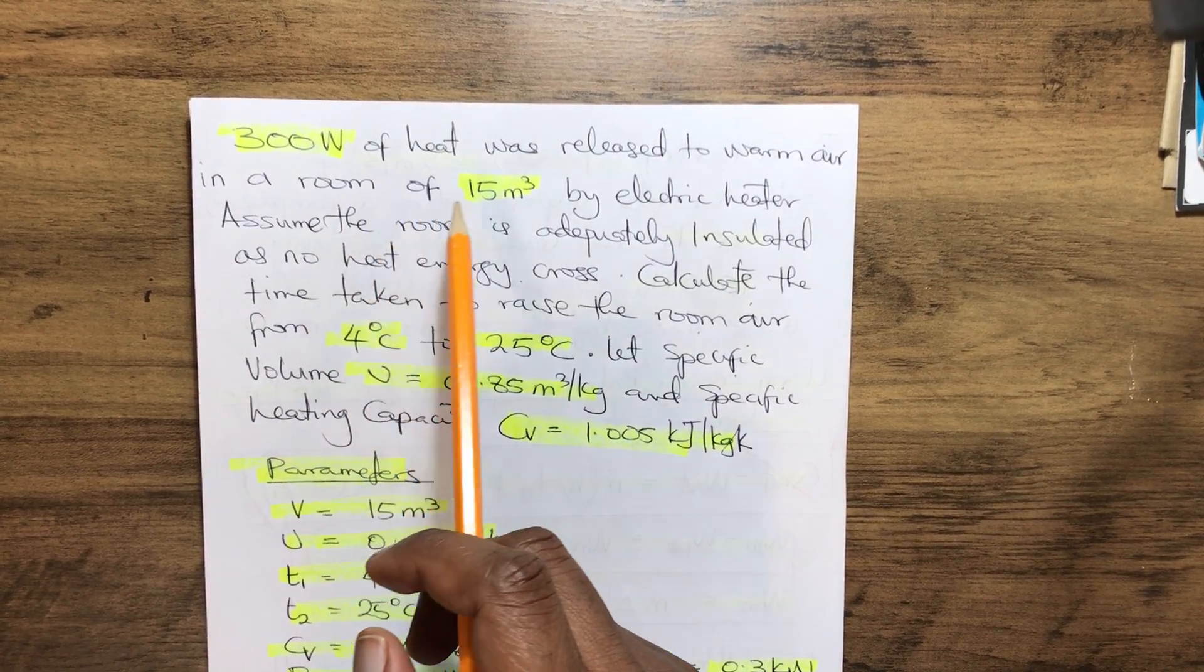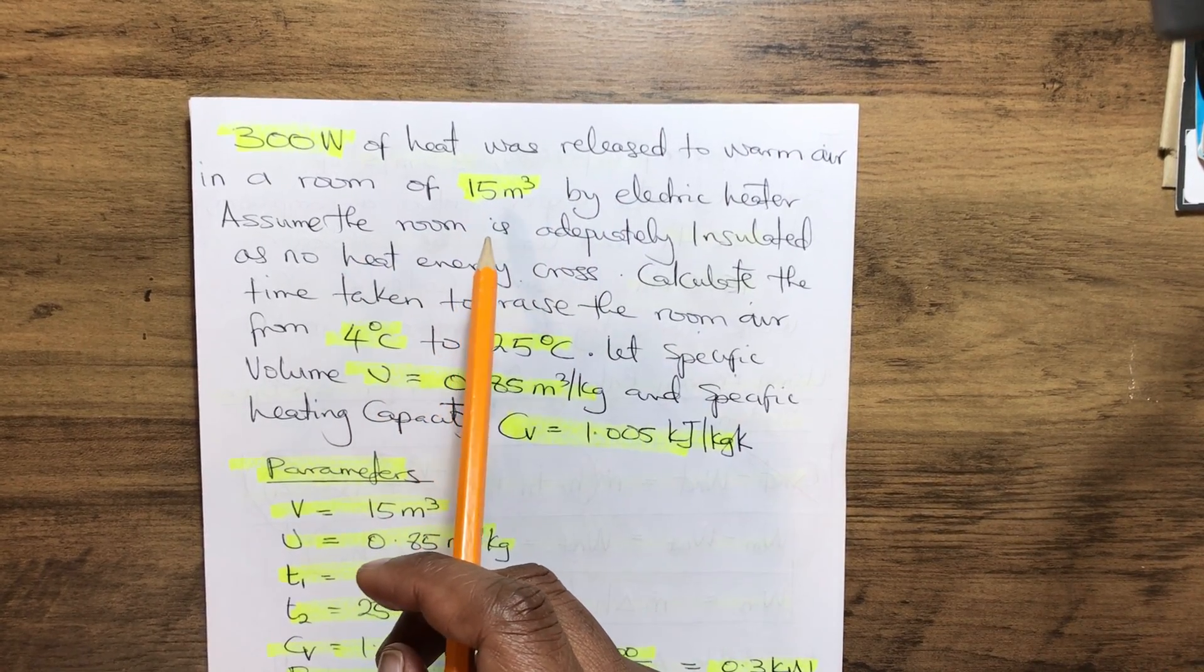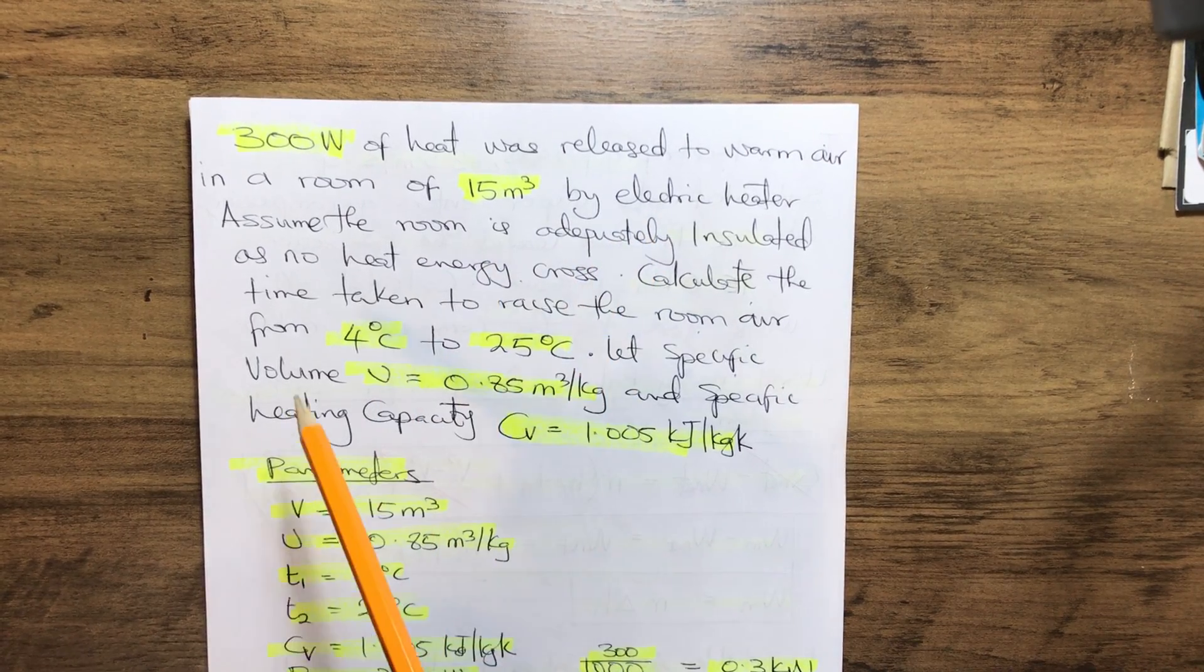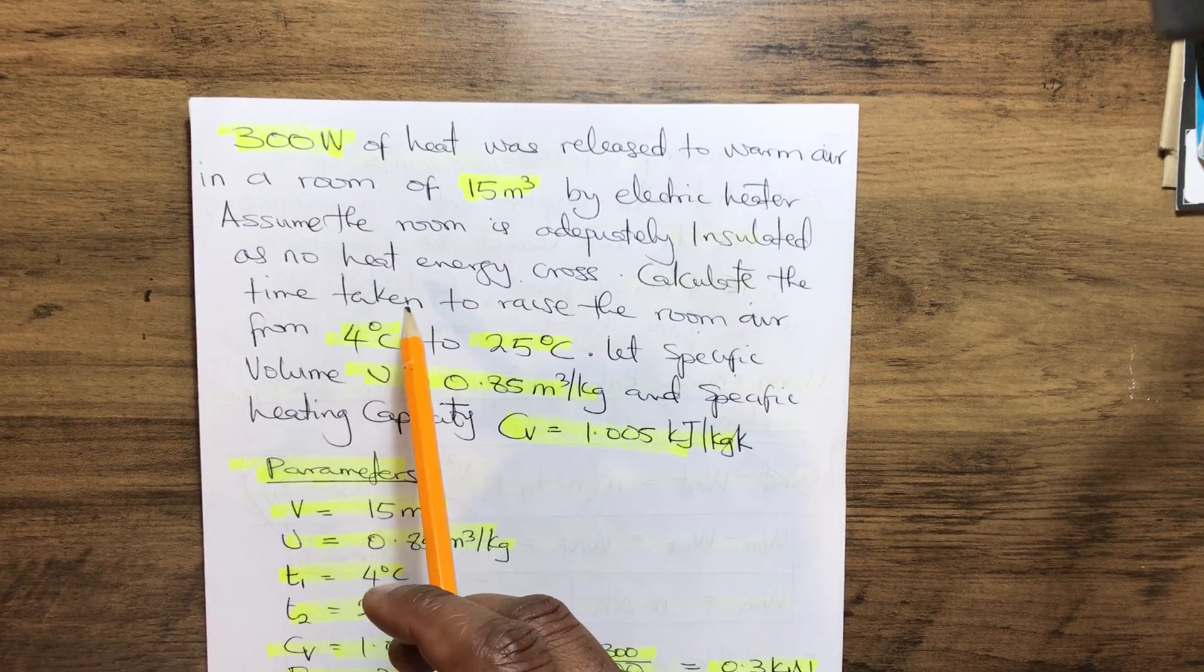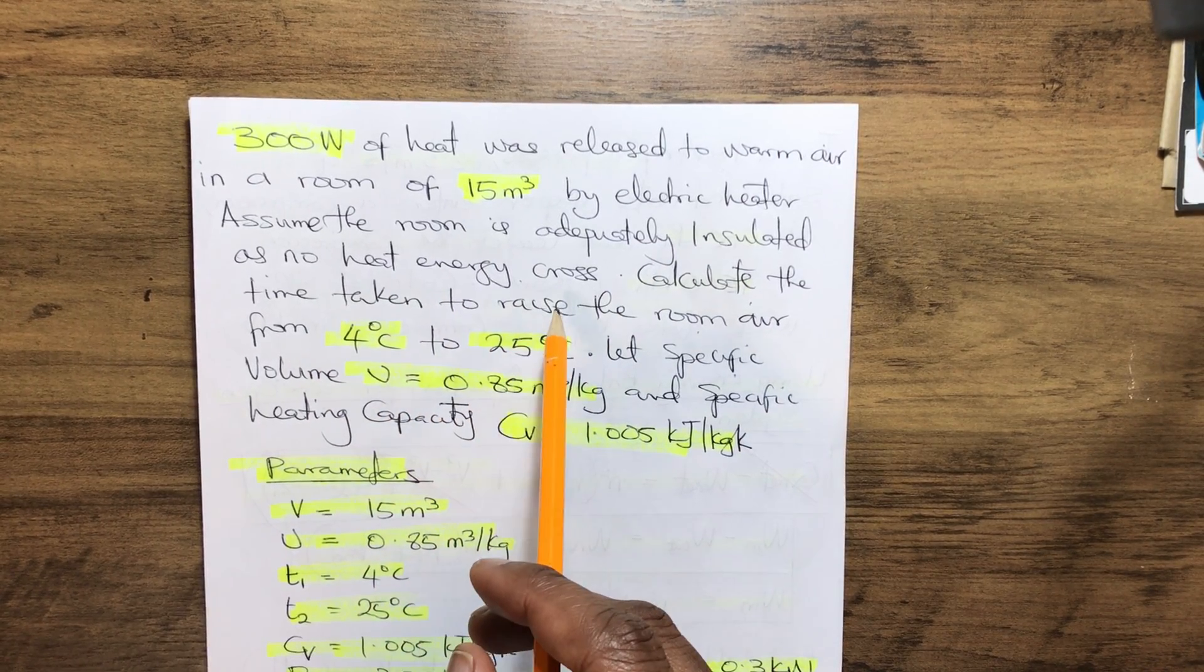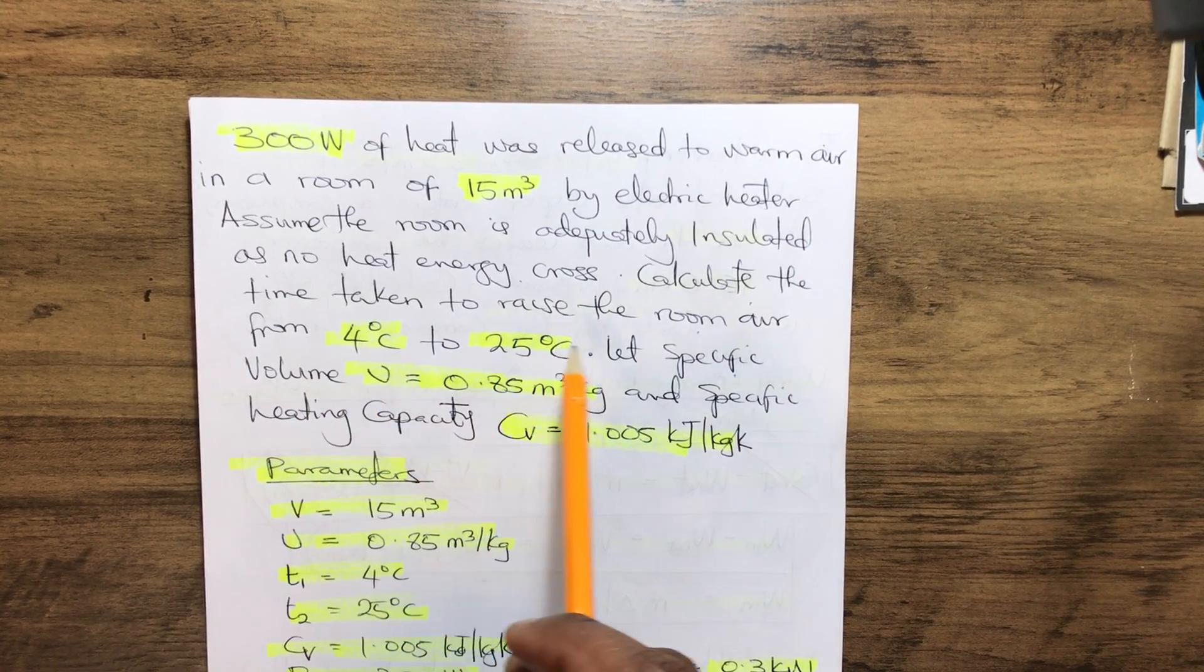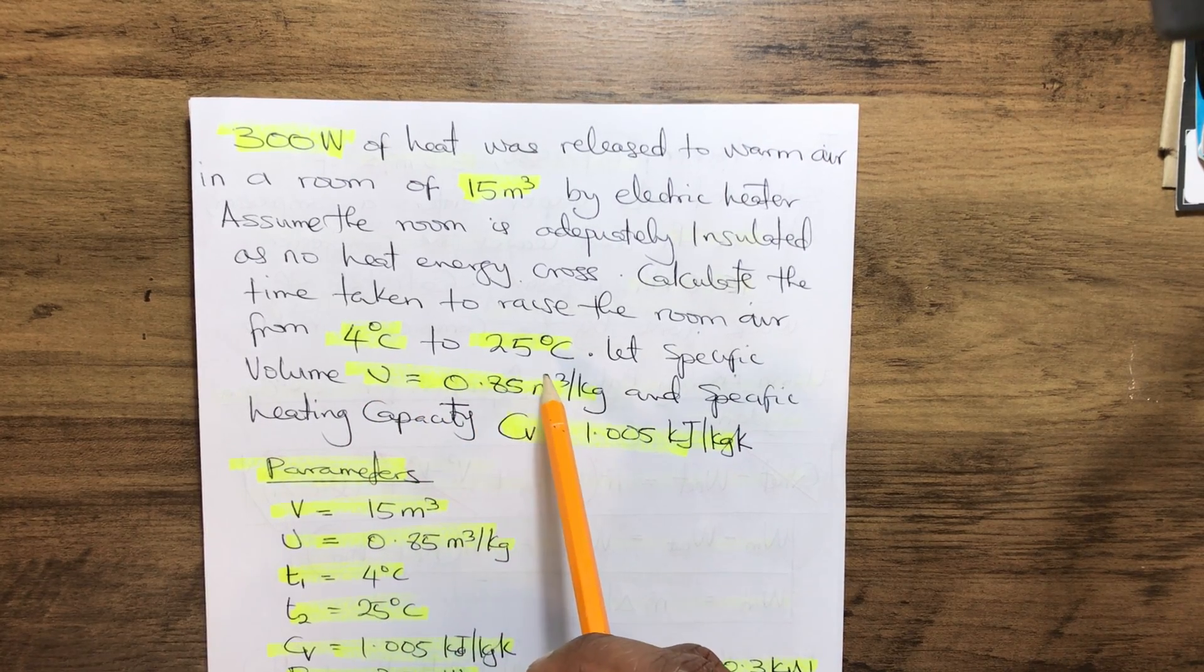300 watts of heat was released to warm air in a room of 15 meter cube by electric heater. Assume the room is adequately insulated as no heat energy crosses the boundary. Calculate the time taken to raise the room air from 4 degrees Celsius to 35 degrees Celsius.